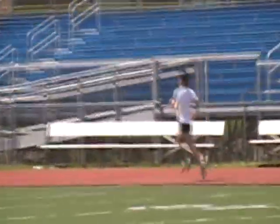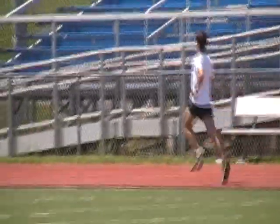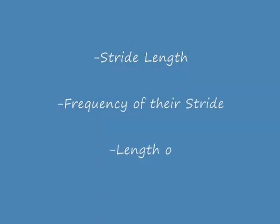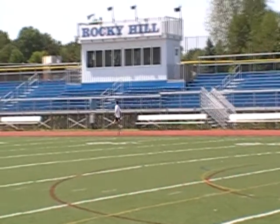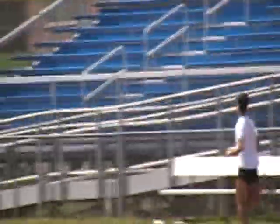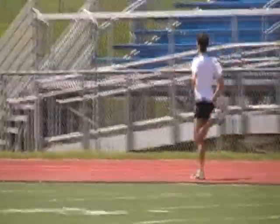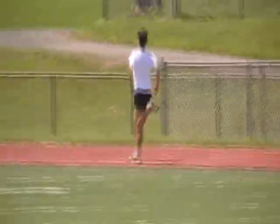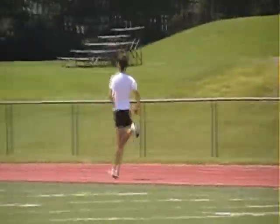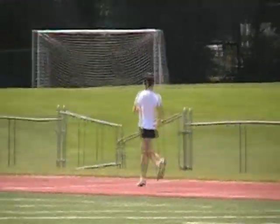There are three main factors which contribute to the speed of an athlete as they run: stride length, the frequency of their stride, and the length of their reach. Whether you are just out for a jog or are racing on the world stage, the three same factors apply. Today in this video, we will provide a basic overview of these components and the physics behind running.